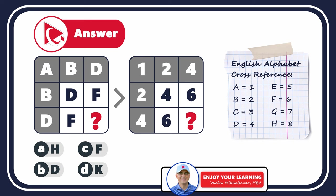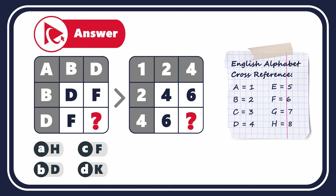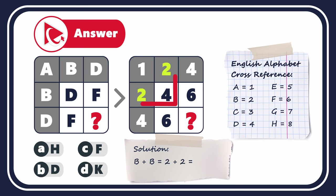The next step is to determine what's happening with the numbers. Numbers in the white squares are the result of adding the numbers in the gray squares. For example: 2 plus 2 equals 4, and 4 plus 2 equals 6 — this is how the numbers in the white squares of the second row are calculated.